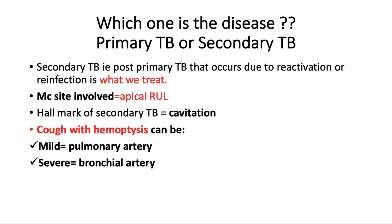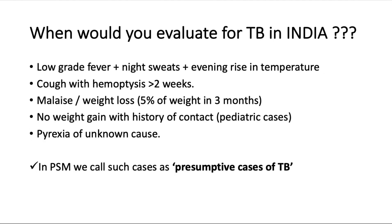Secondary TB — also called post-primary TB — occurs due to reactivation or reinfection, and this is what we treat. The most common site involved is the apical right upper lobe, due to the high V/Q ratio there. The hallmark of secondary TB is cavitation — you will not see cavitation in primary TB, only a Ghon focus. Hemoptysis can be seen; if mild, it usually involves the pulmonary artery; if severe, most commonly the bronchial artery.